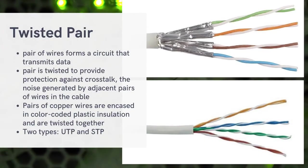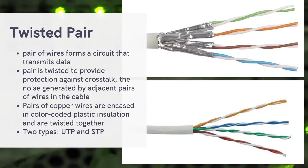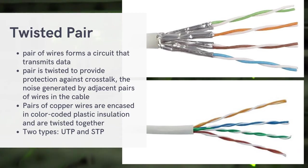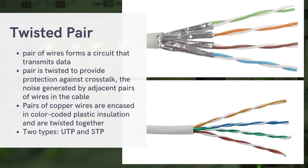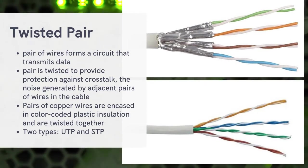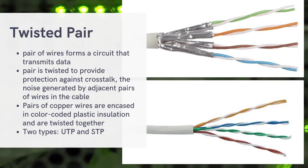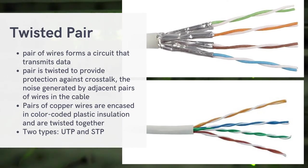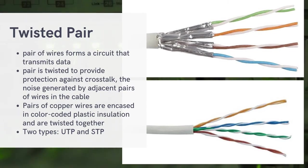Pairs of copper wires are encased in color-coded plastic insulation and twisted together. Twisted pair consists of four pairs of wires: green, white-green, orange, white-orange, blue, white-blue, brown, and white-brown. There is a color code to follow when using these wires, and both ends of the cable must use the same color code when using a LAN connection.